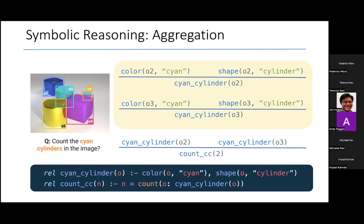The last construct I'm going to illustrate in my talk is aggregation. In this case, I changed the question again to count all the cyan cylinders in the image. I want all the objects in the image that are of shape cylinder and color cyan.